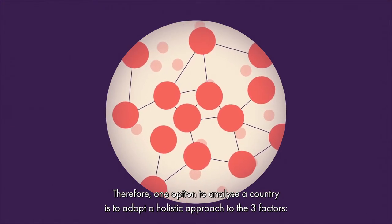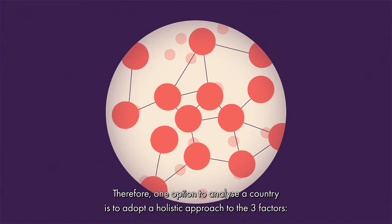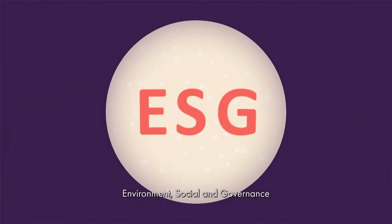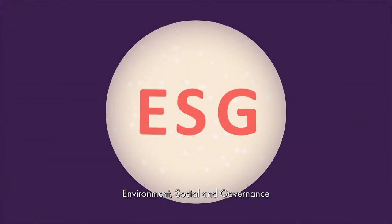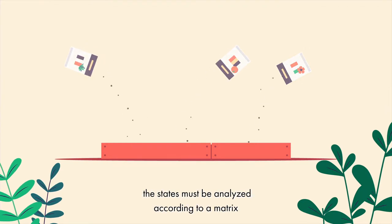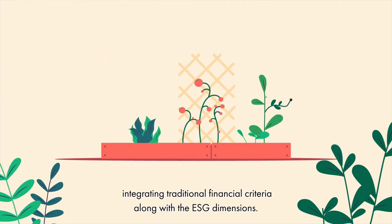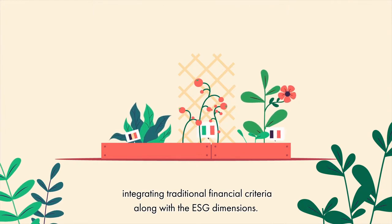One option to analyze a country is to adopt a holistic approach to the three factors — environment, social, and governance — and consider them in any analysis of countries and the sovereign debt they issue. As with any economic actors, states must be analyzed according to a matrix integrating traditional financial criteria along with the ESG dimensions.